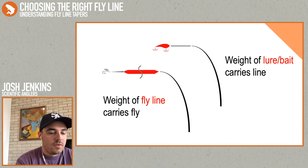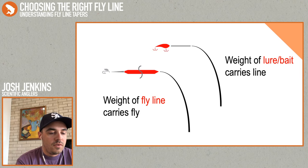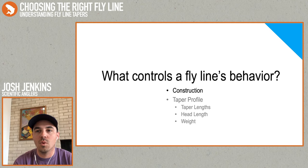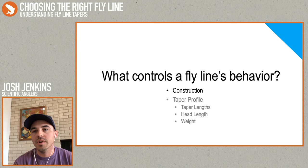What controls a fly line's behavior? There are really two things. The first is the construction — how the fly line is actually made — which is mainly going to determine how that line acts in different environments or what temperature that line is going to be ideal for. The second is the taper profile, which is actually going to determine how that line delivers your fly and how it's going to cast.